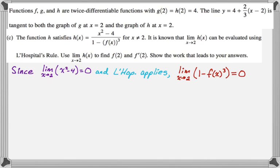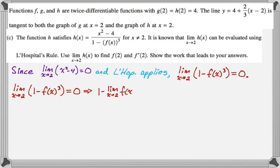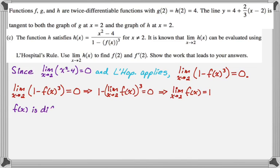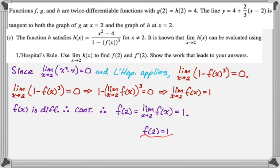Since the limit of the denominator is zero, distributing the limit gives one minus the limit as x approaches two of f of x cubed equals zero, which means the limit as x approaches two of f of x equals one. Since f of x is differentiable, it is continuous, so f of two equals the limit as x approaches two of f of x, which we just found is one. Therefore f of two equals one.